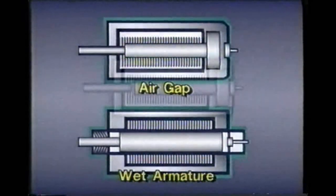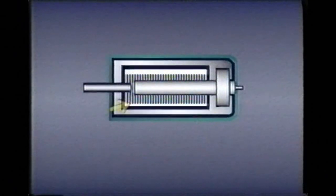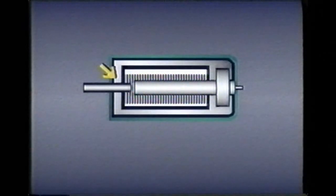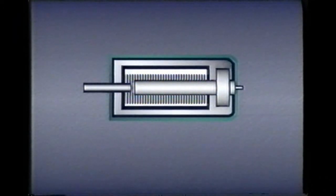An air gap solenoid consists of a wire coil surrounded on three sides by a C-shaped iron frame. Both frame and coil are often encapsulated in plastic for protection. An iron rod or plunger is inserted through the hole in the coil.